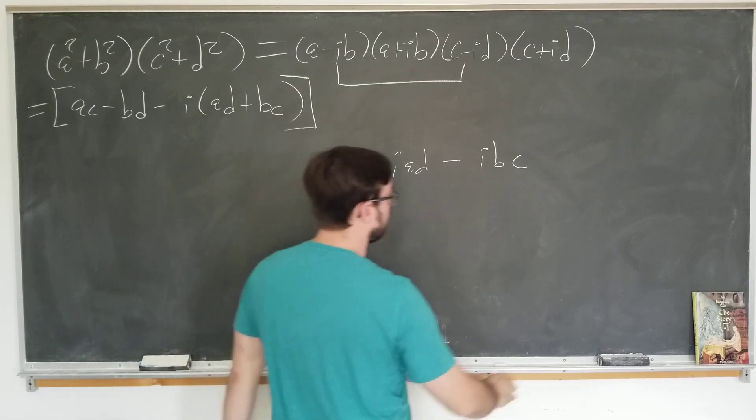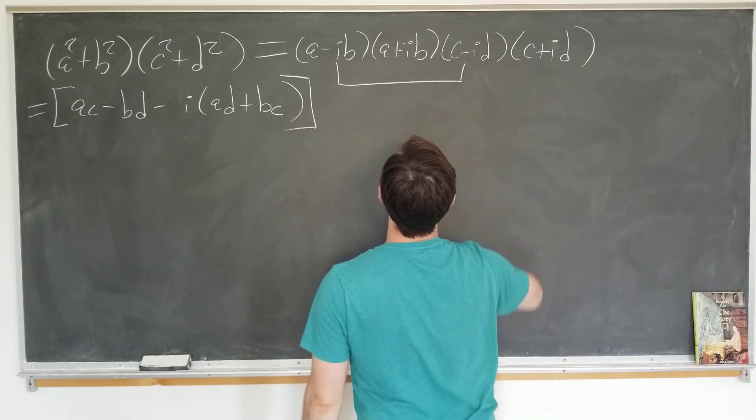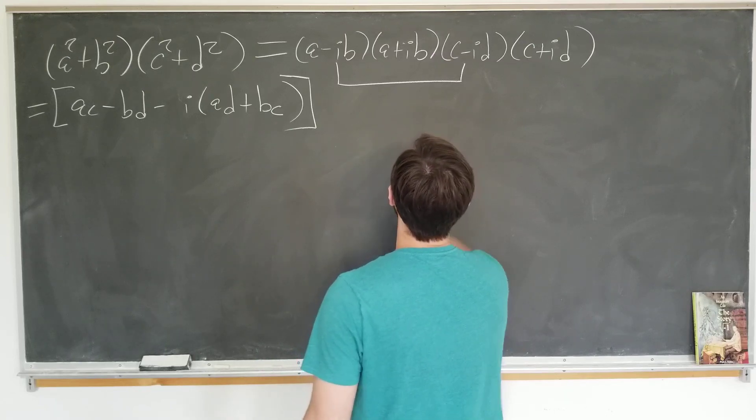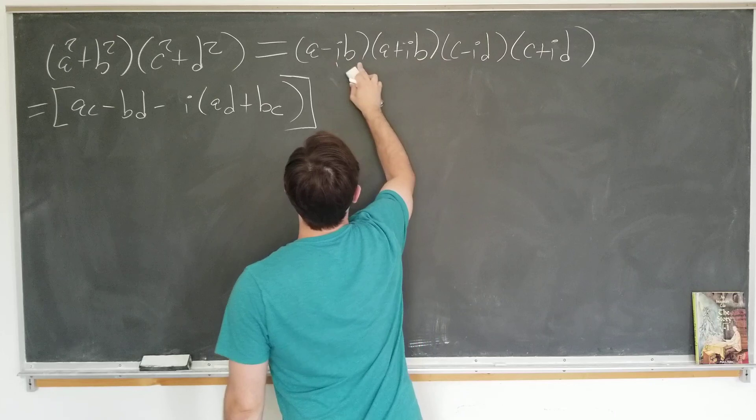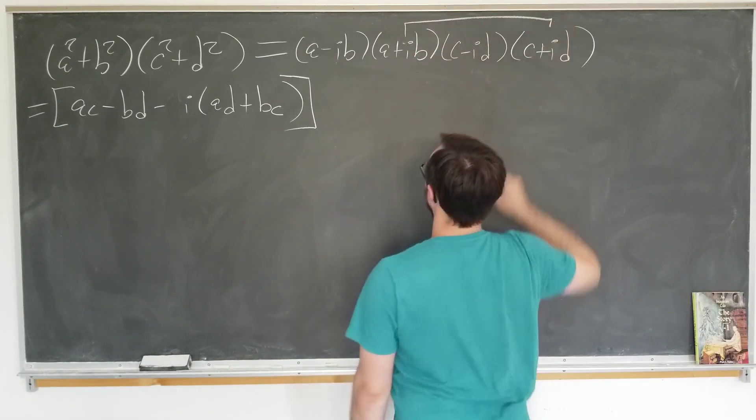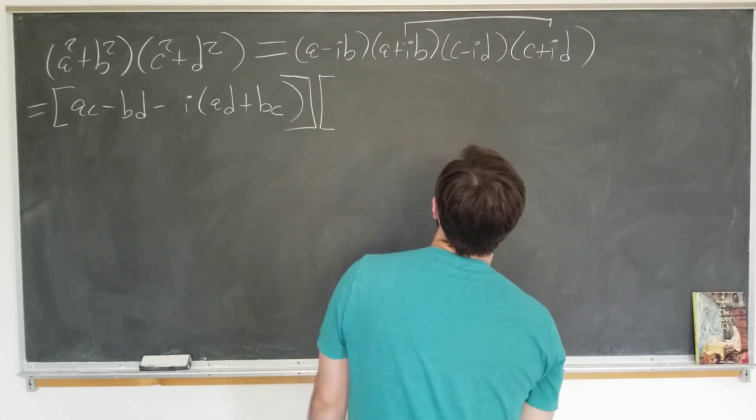And now what we're going to do is multiply the other two together. We did the first two. Now we're going to do the last two. Multiply these bad boys together.